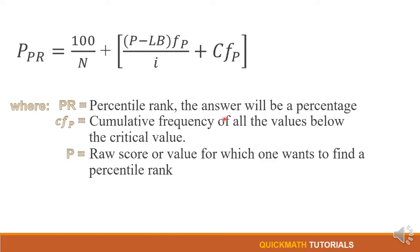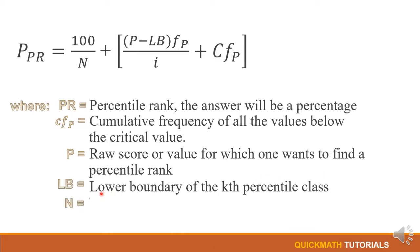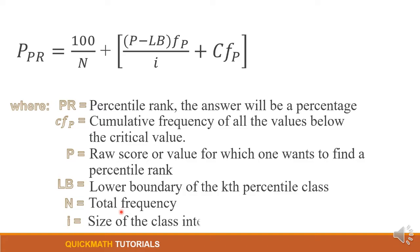Where PR is the percentile rank and the answer will be a percentage, cf sub B which is equal to cumulative frequency of all the values below the critical value, and P is a raw score or value for which one wants to find a percentile rank. And LB is the lower boundary of the case percentile class, and N is the total frequency. Lastly, i is equal to the size of the class interval.